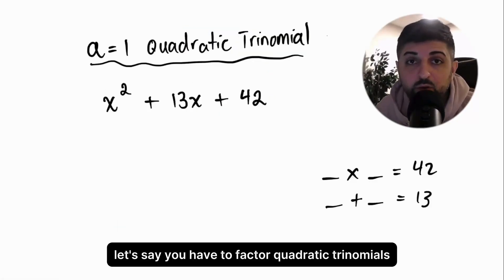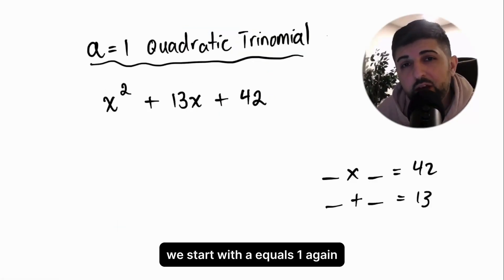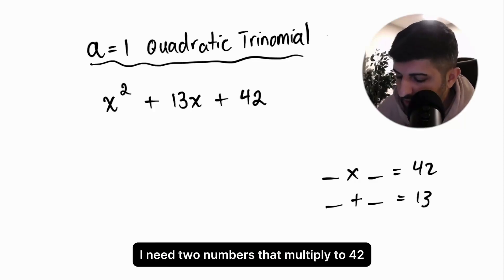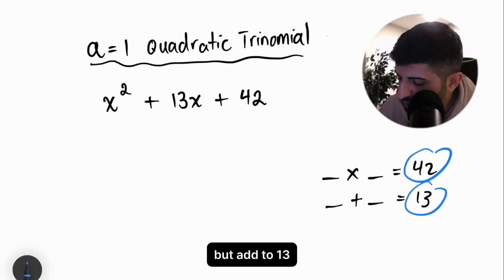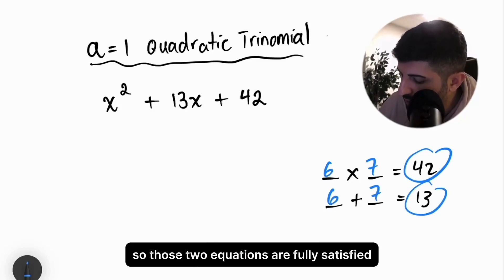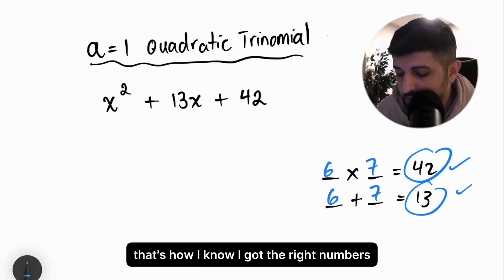Let's say you have to factor quadratic trinomials. We start with a equals 1. That's easier than a not equal 1. How do I do this? I need two numbers that multiply to 42, but add to 13. What are the numbers? 6 and 7. Those two equations are fully satisfied. That's how I know I got the right numbers.